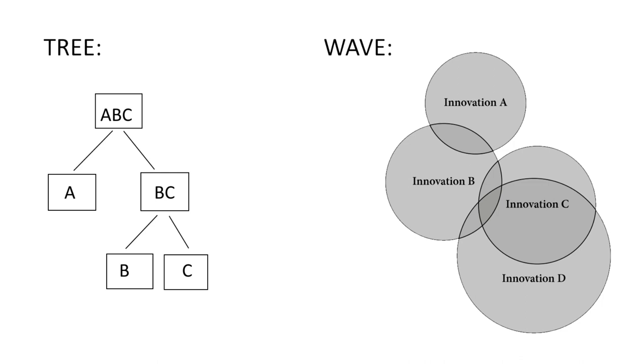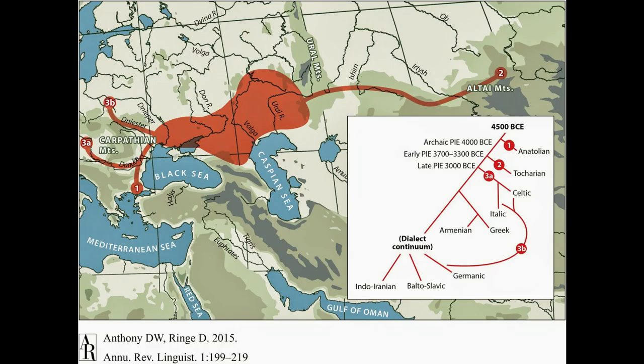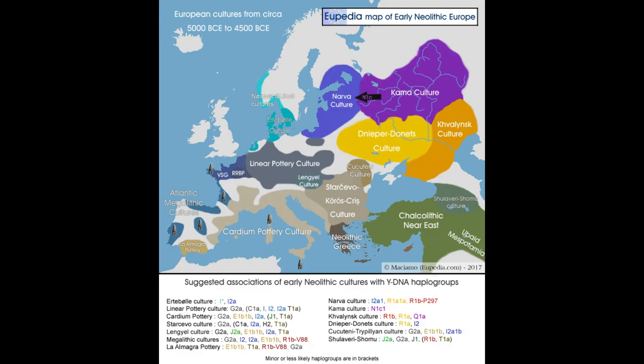How are languages created? According to the old theory, there was one common language, one Urhaimat, from which a group of people migrated to different areas and started speaking differently for no reason. But according to my theory, there was a place, a land, which was invaded by different people, different cultures — hunter-gatherers, agricultural people, pastoral people. All of them had their own language and they created a new common language. And as it turns out, I only reinvented the wave model.